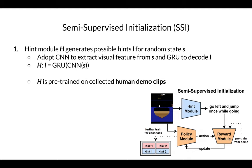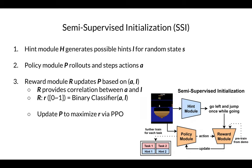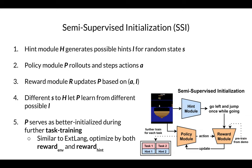In detail, hint module H is an image captioner which uses a CNN to extract visual features from state S and a GRU to decode the language hint L. H is pre-trained on collected human demo clips, which include pairs of state frames and text descriptions. Policy module P is a recurrent action selector that outputs action A_t for state S_t. Same as the baseline EXT Language, reward module R is a binary classifier that provides a correlation score between action frequency A and hint L. This reward is used to update policy module P with PPO (proximal policy optimization). As a better initialized policy, P is further optimized by both environment reward and hint reward during task training.